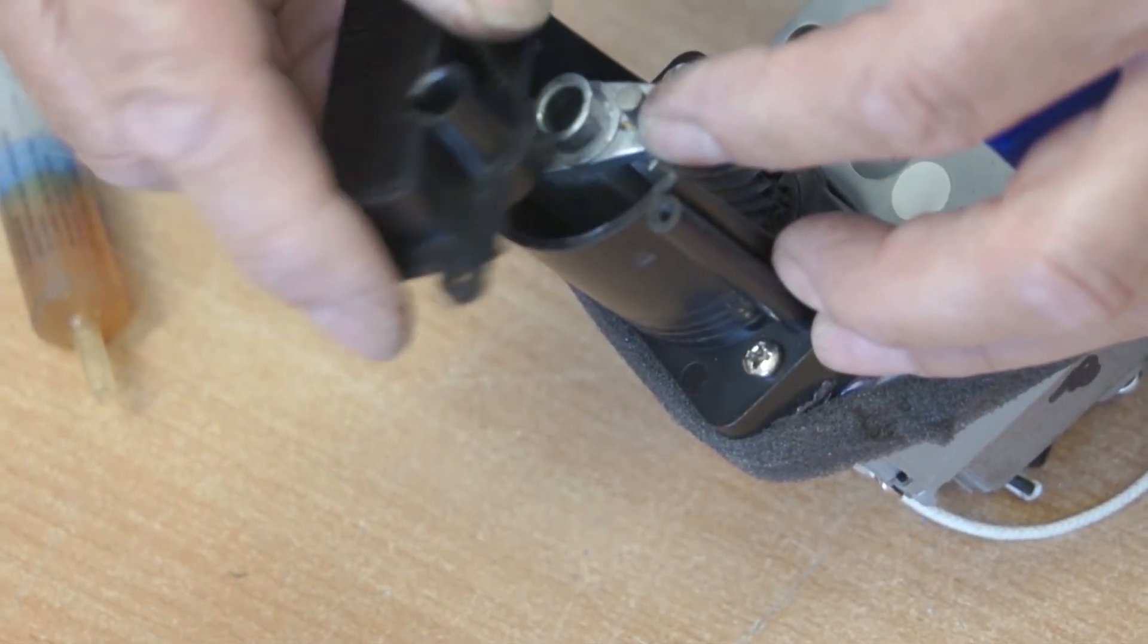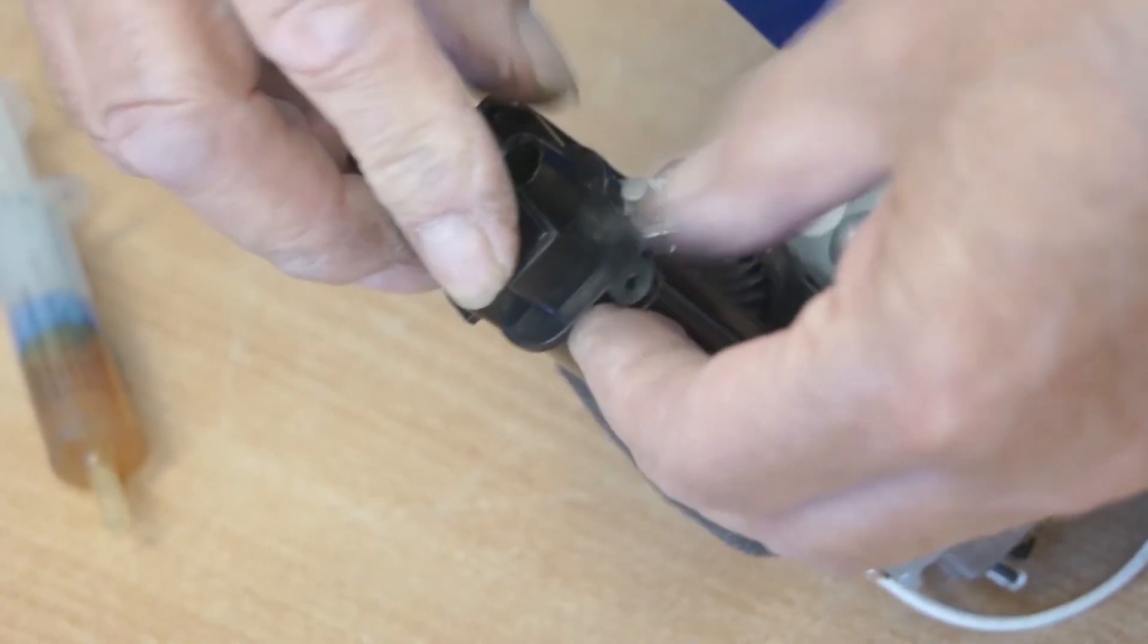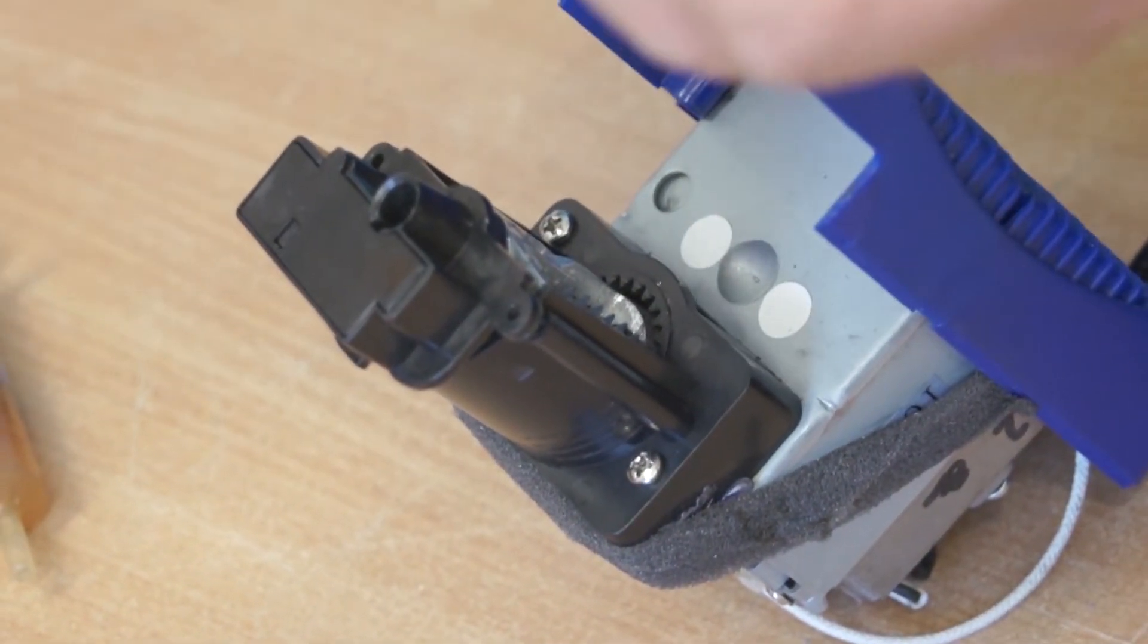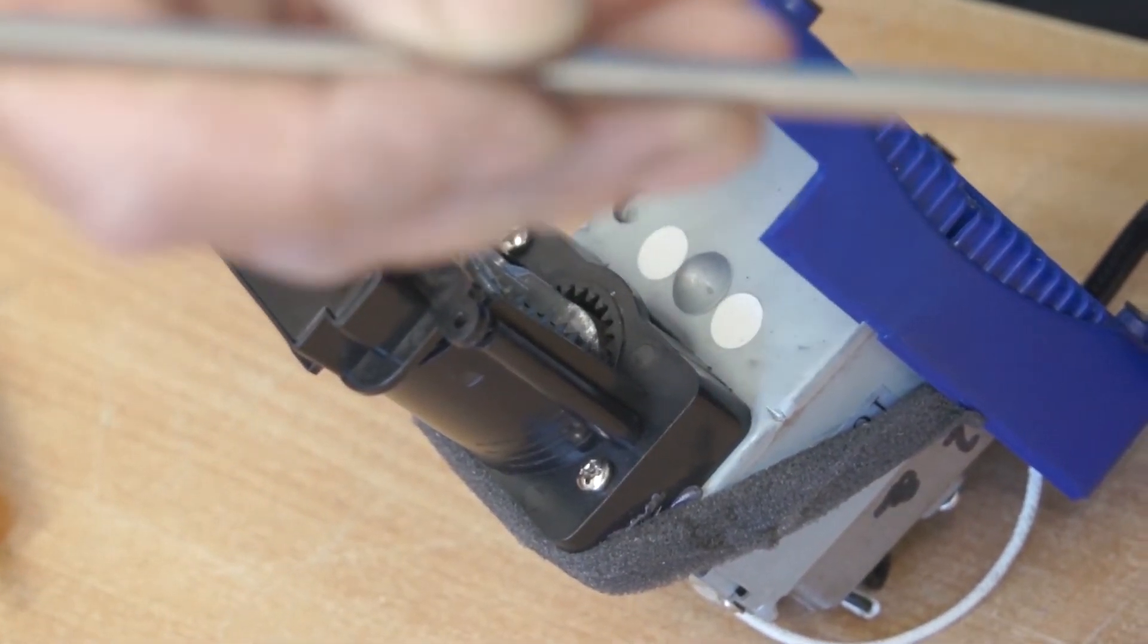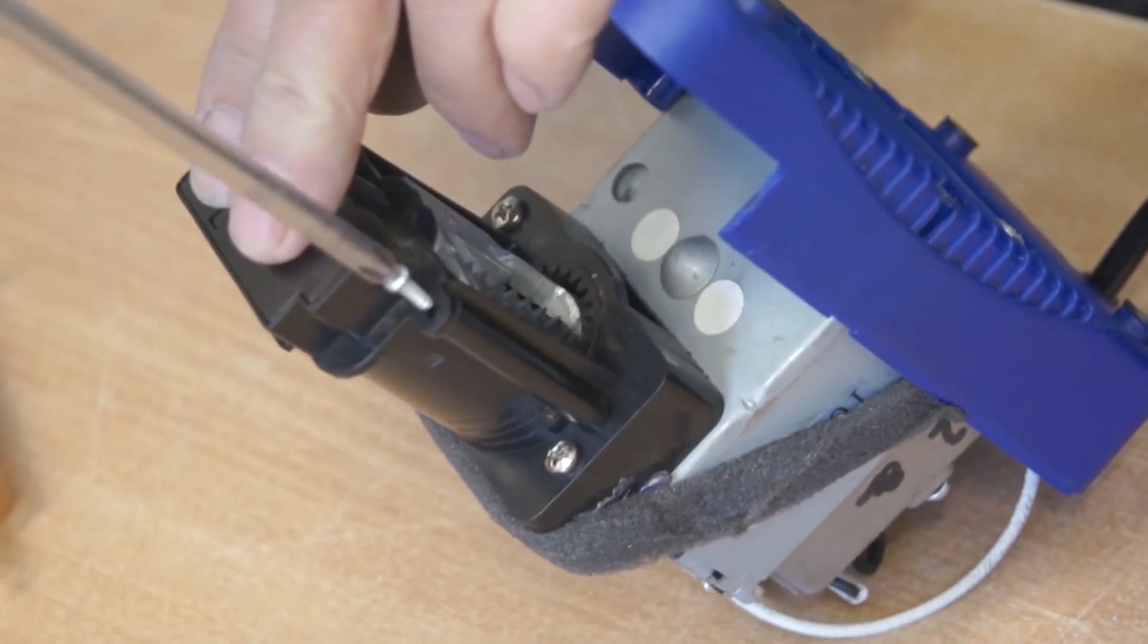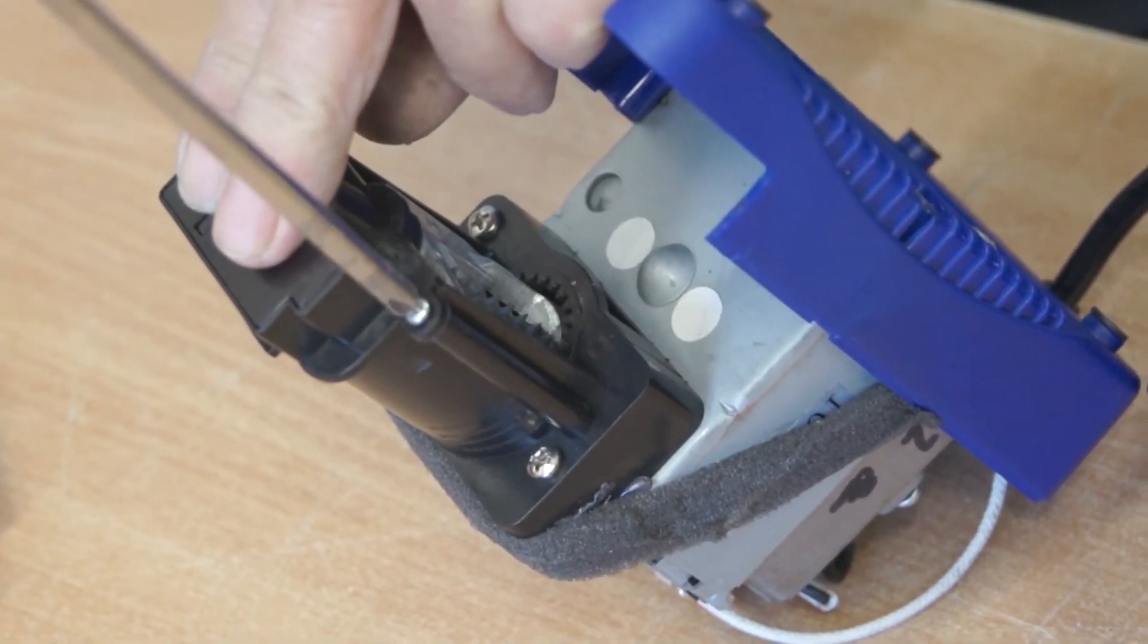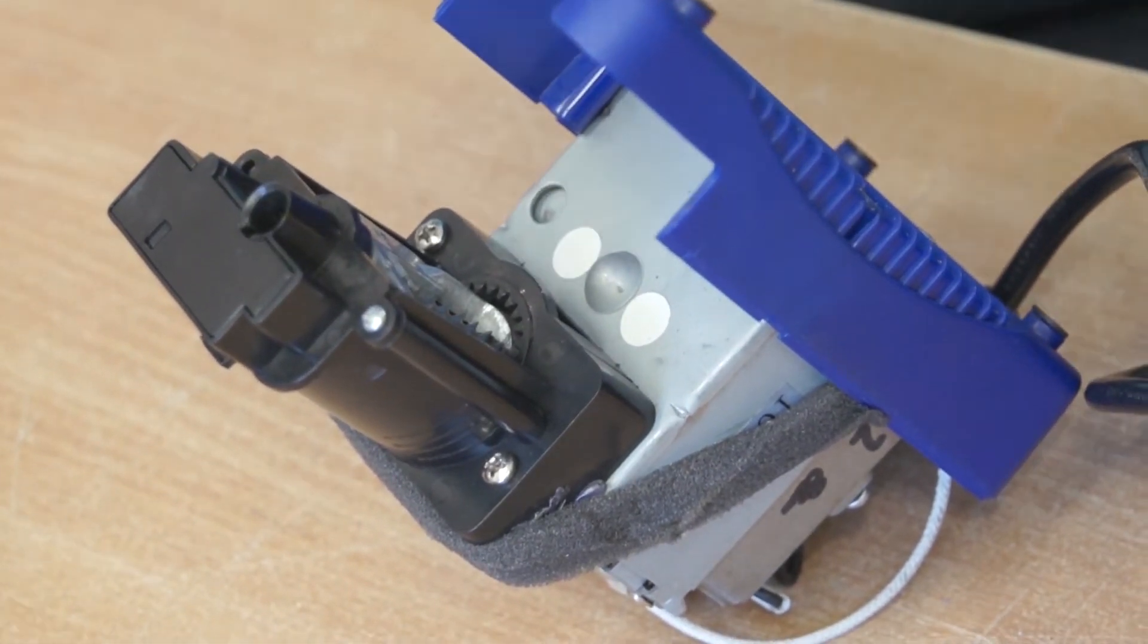Then rotate this back through 90 degrees and place it as such and replace the two smallest screws. I must stress, do not over tighten these screws as they are screwing into plastic.